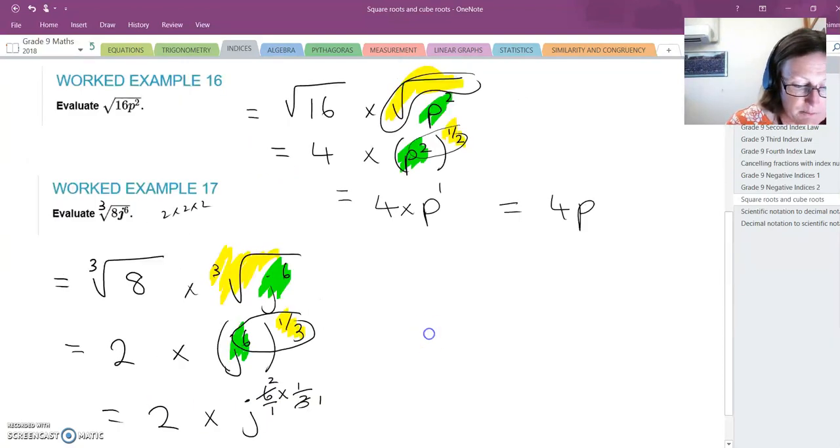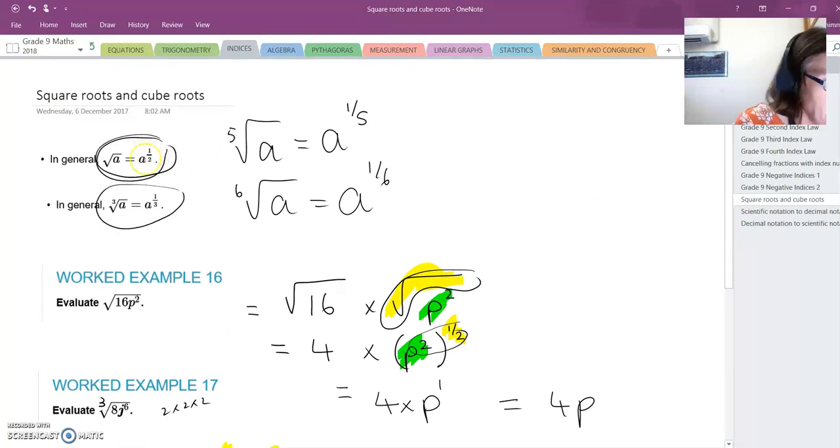So in summary, a square root is equivalent to an index of a half, a cube root is equivalent to the index of a third.